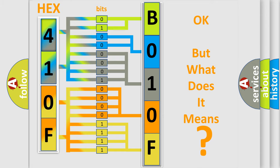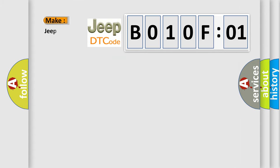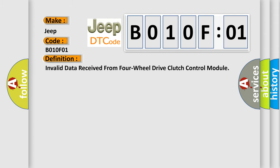So, what does the diagnostic trouble code B010F01 interpret specifically? Jeep car manufacturers. The basic definition is invalid data received from four wheel drive clutch control module.